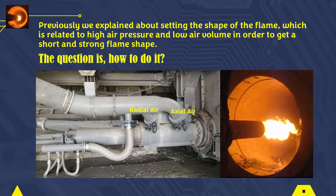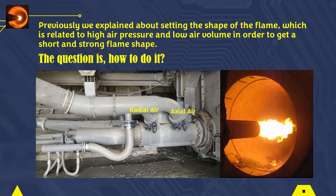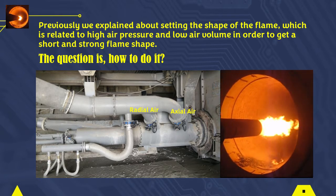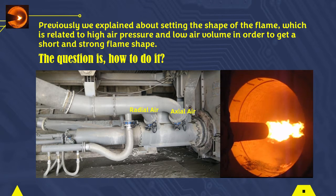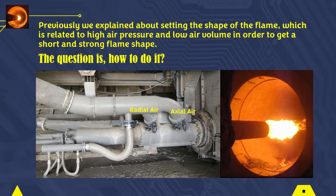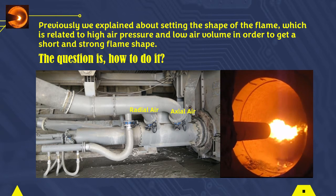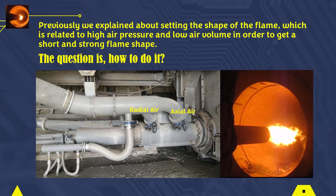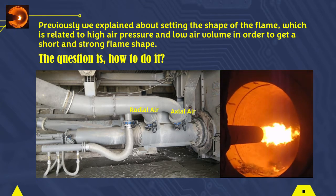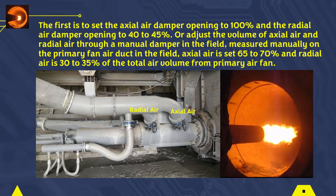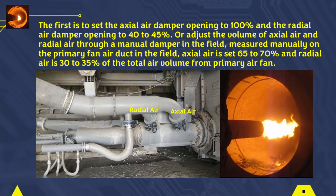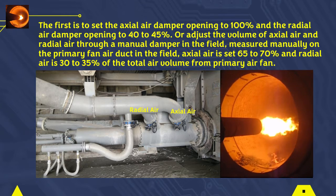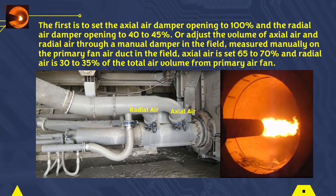Previously we explained about setting the shape of the flame, which is related to high air pressure and low air volume in order to get a short and strong flame shape. The question is, how to do it? The first step is to set the axial air damper opening to 100%.